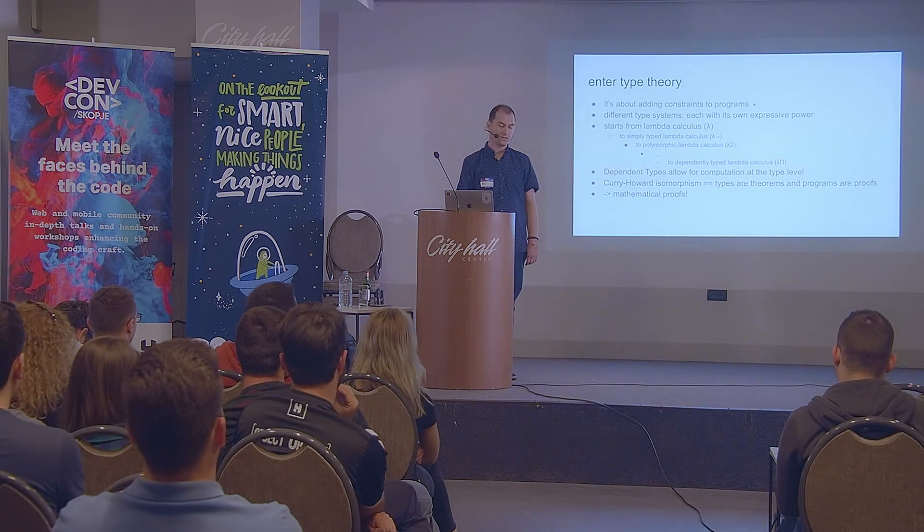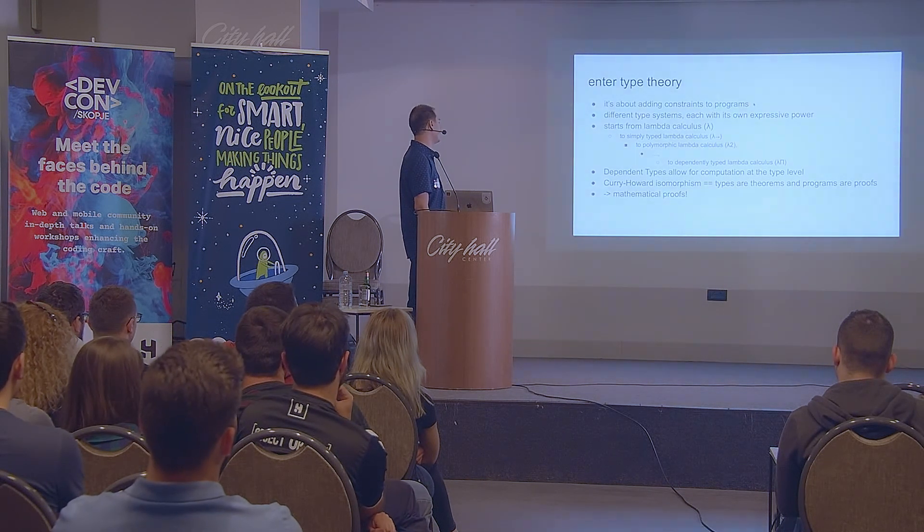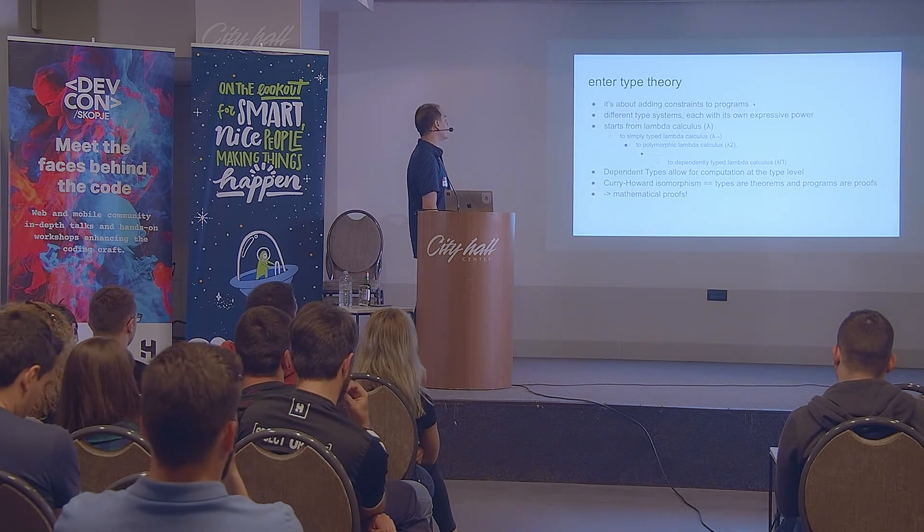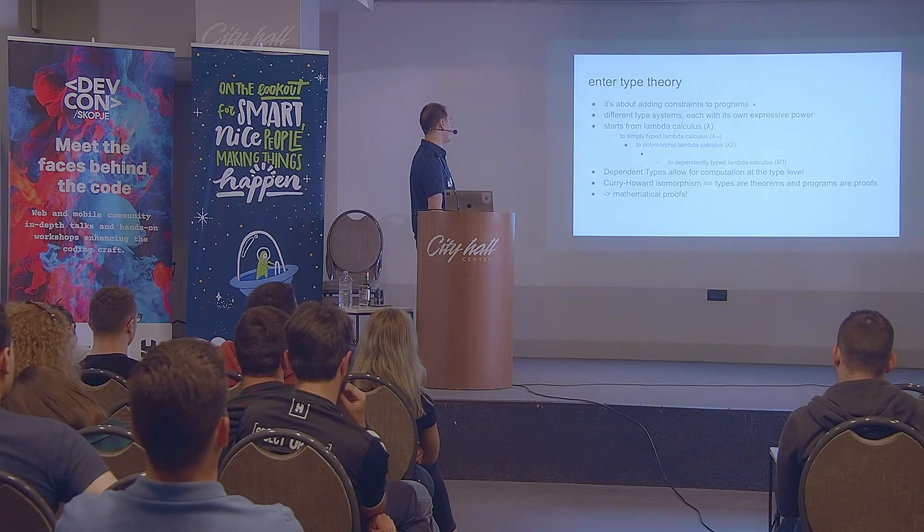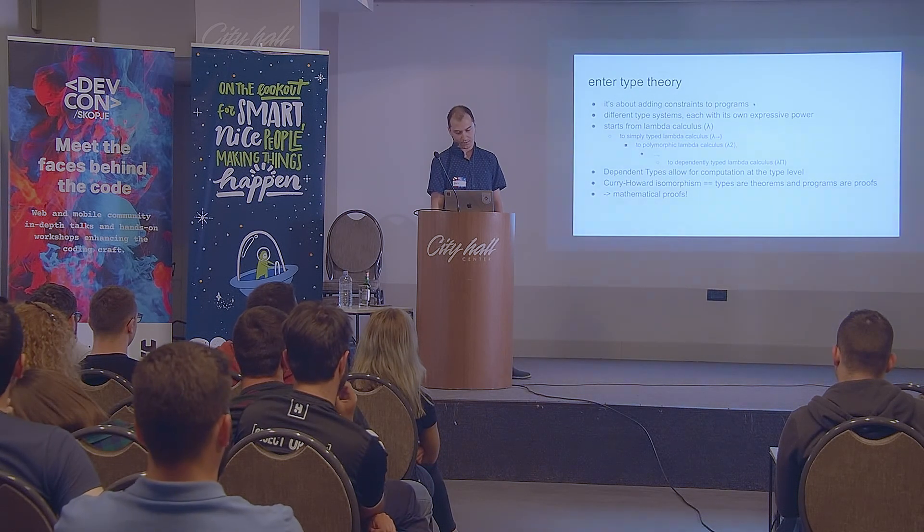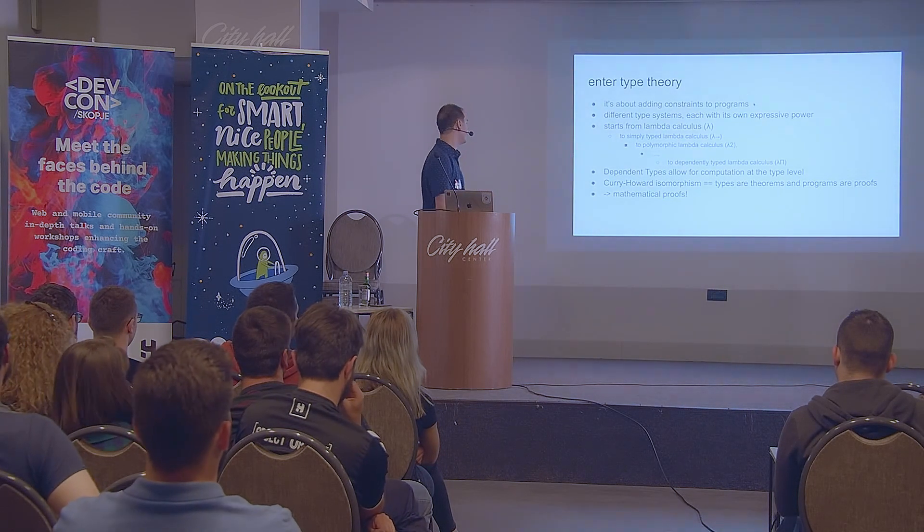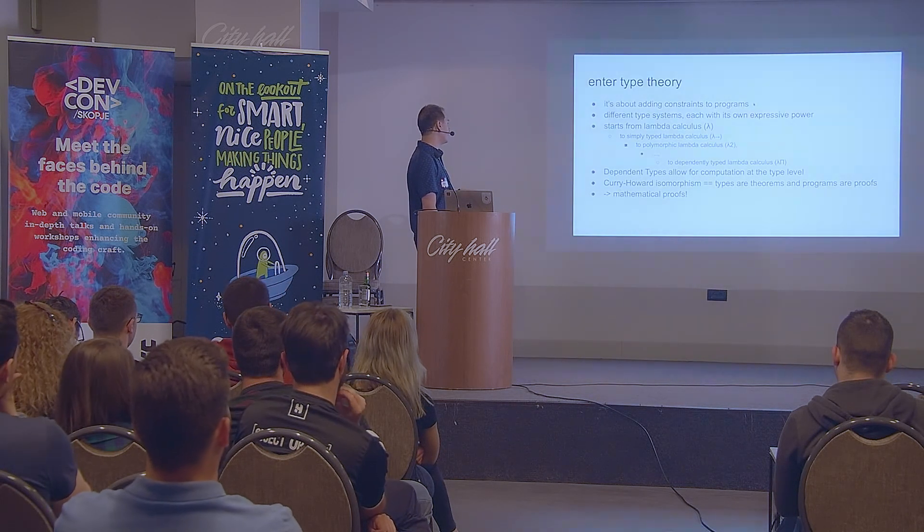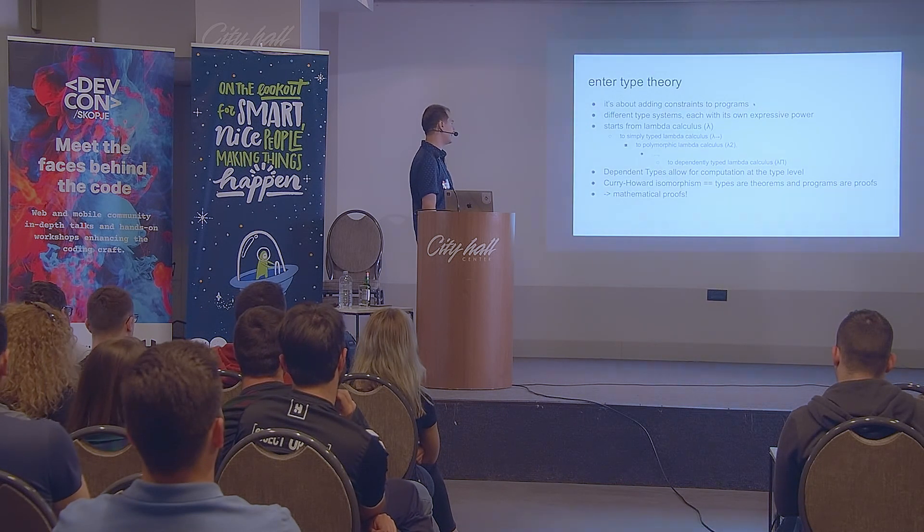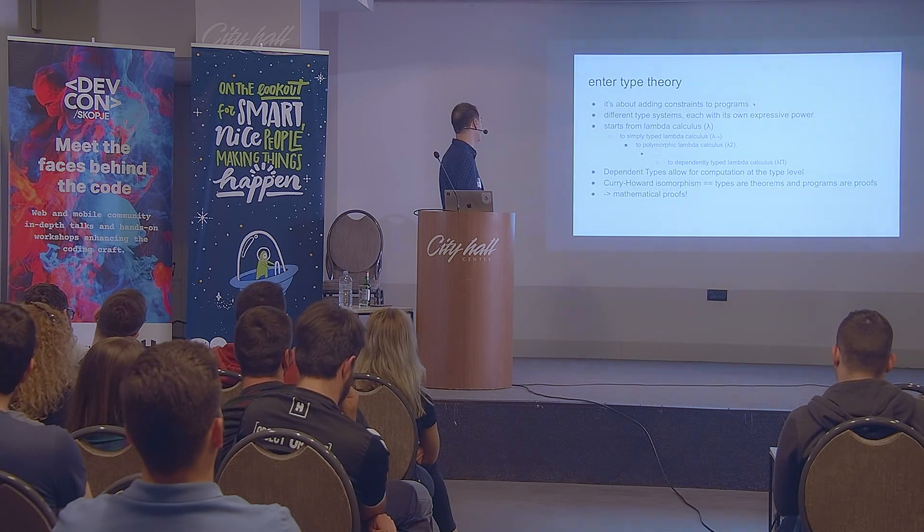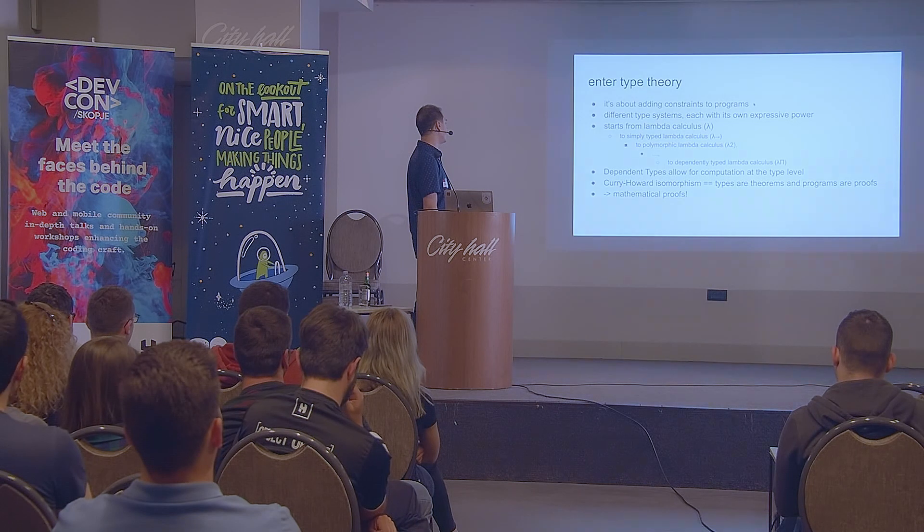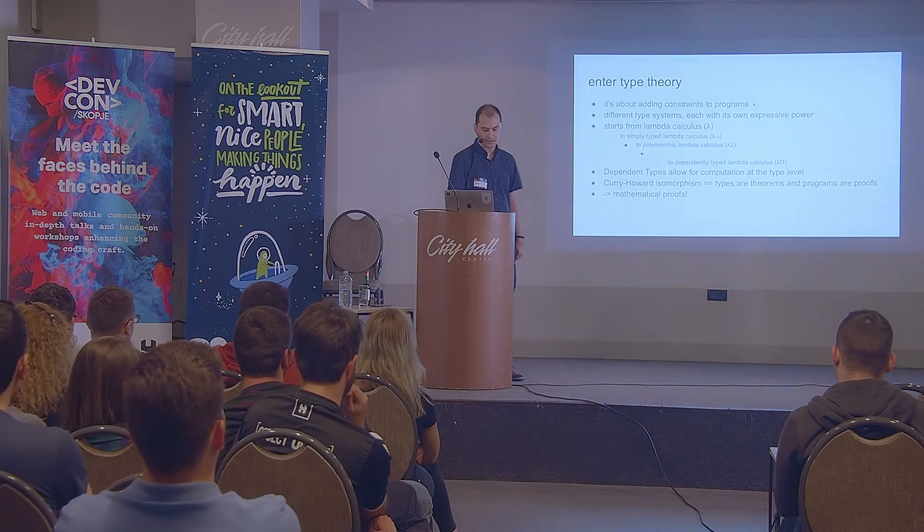Another important concept is the Curry-Howard isomorphism. It's named after the mathematicians Haskell Curry and William Howard. And what it's saying is that types are theorems and programs are proofs. We won't get too deep into detail because it will take much more than a single presentation to do that. So given the Curry-Howard isomorphism and dependent types, we arrive at mathematical proofs, which is really awesome.